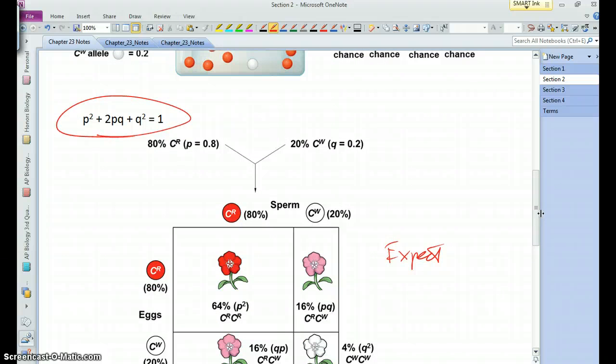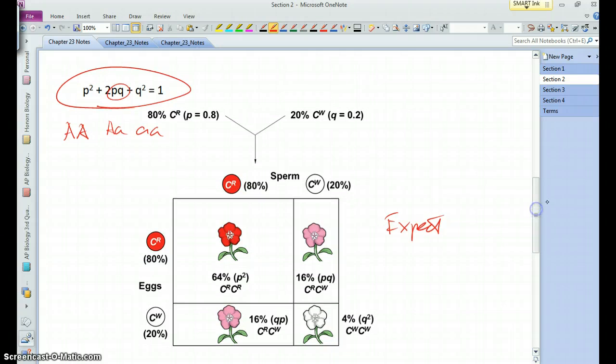Essentially, p squared represents the homozygous combination of one of those alleles. It's typically, say, the dominant form. Q squared represents the homozygous combination of the other allele, typically the recessive. And 2pq, or pq essentially represents the heterozygotes.